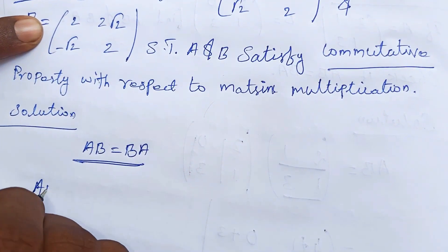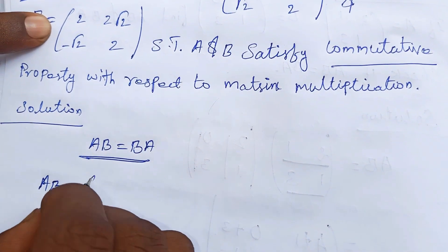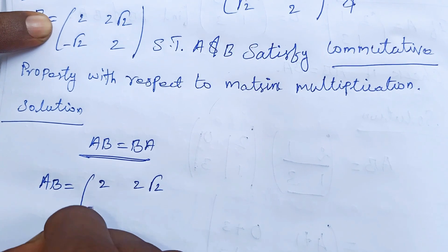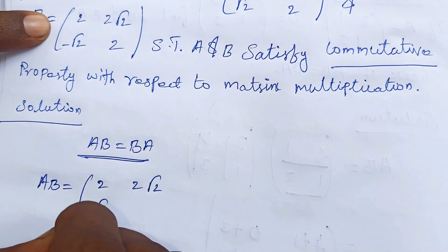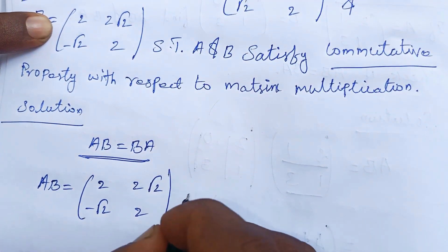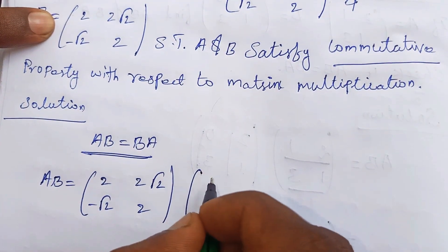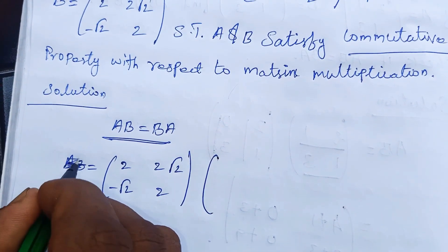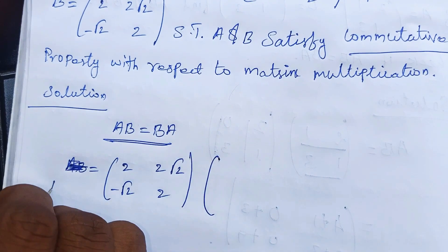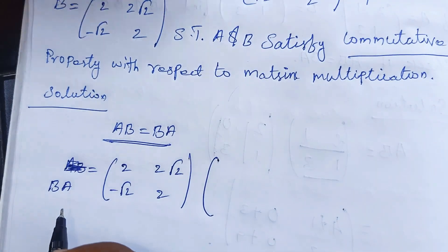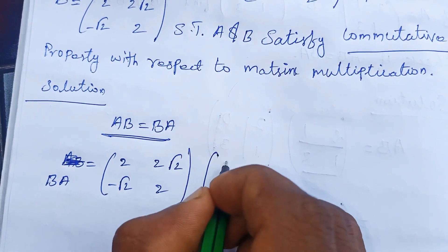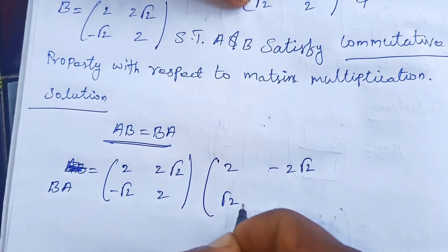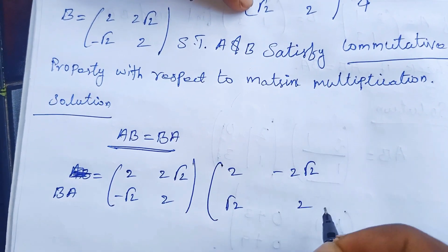First we are going to find AB. A equals [2, -2√2; √2, 2] and B equals [2√2, -√2; 2, 2]. We then also need to find BA, where B equals [2√2, -√2; 2, 2] and A equals [2, -2√2; √2, 2].